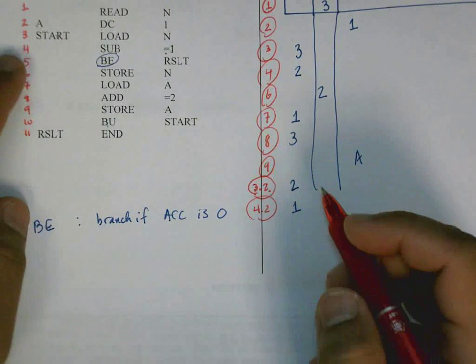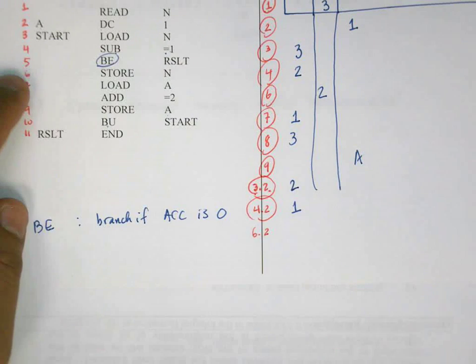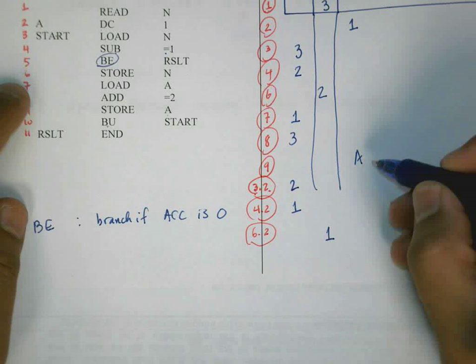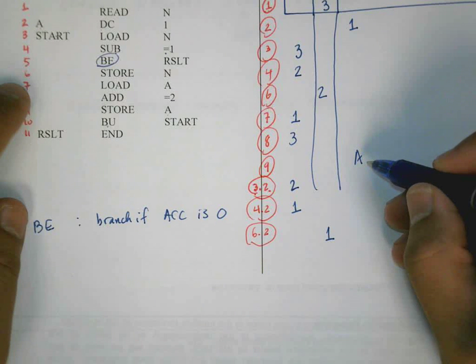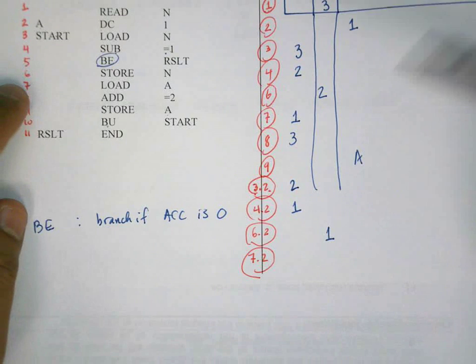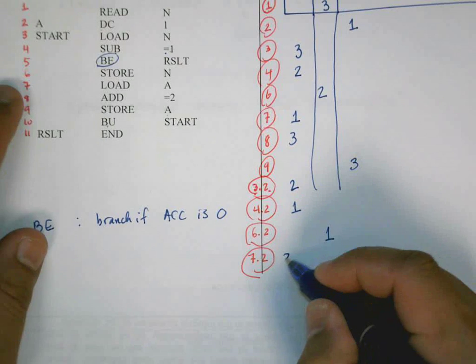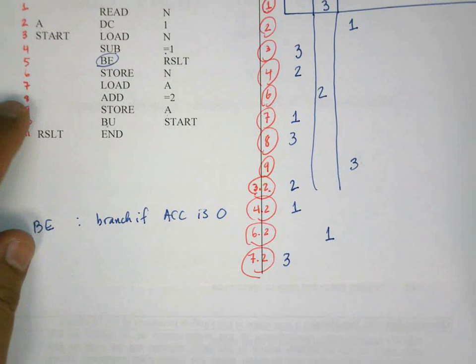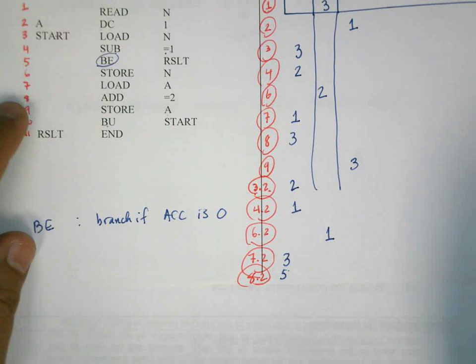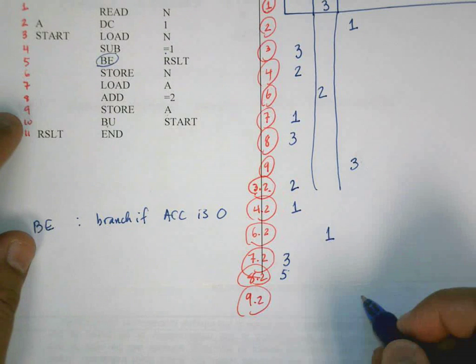So whatever is in N, N currently has two in it. Throw it into the accumulator. Subtract one from it. So now the accumulator has one. And this is line 4.2. Next, line 5.2. Branch, if the accumulator is equal to zero, that does nothing. So we go on to line 6.2. Store the value of the accumulator into N. So the N now has one. Load the result of A into the accumulator. So this is 7.2. I think I goofed on the next one. I wrote an A in here and I really should have written a three. So now, after line 7.2, load A. So whatever is in A, put it in here, in the accumulator. Line 8, add two to that. So now we have five. So this is line 8.2. Store the result in A. This is line 9.2. So whatever is in A, and whatever is in the accumulator, store it in A.